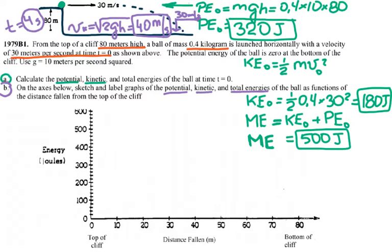So the object hits the ground in 4 seconds. The horizontal distance traveled is velocity times time — 30 meters per second times 4 seconds — so the object lands 120 meters away horizontally.